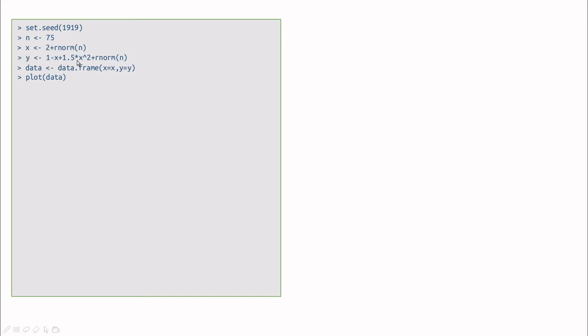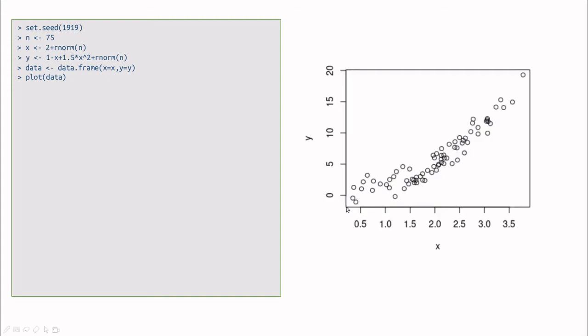So the first coefficient is minus one, and the quadratic coefficient is 1.5. So let's take a look at the data. As you can see here, this is clearly a parabola.